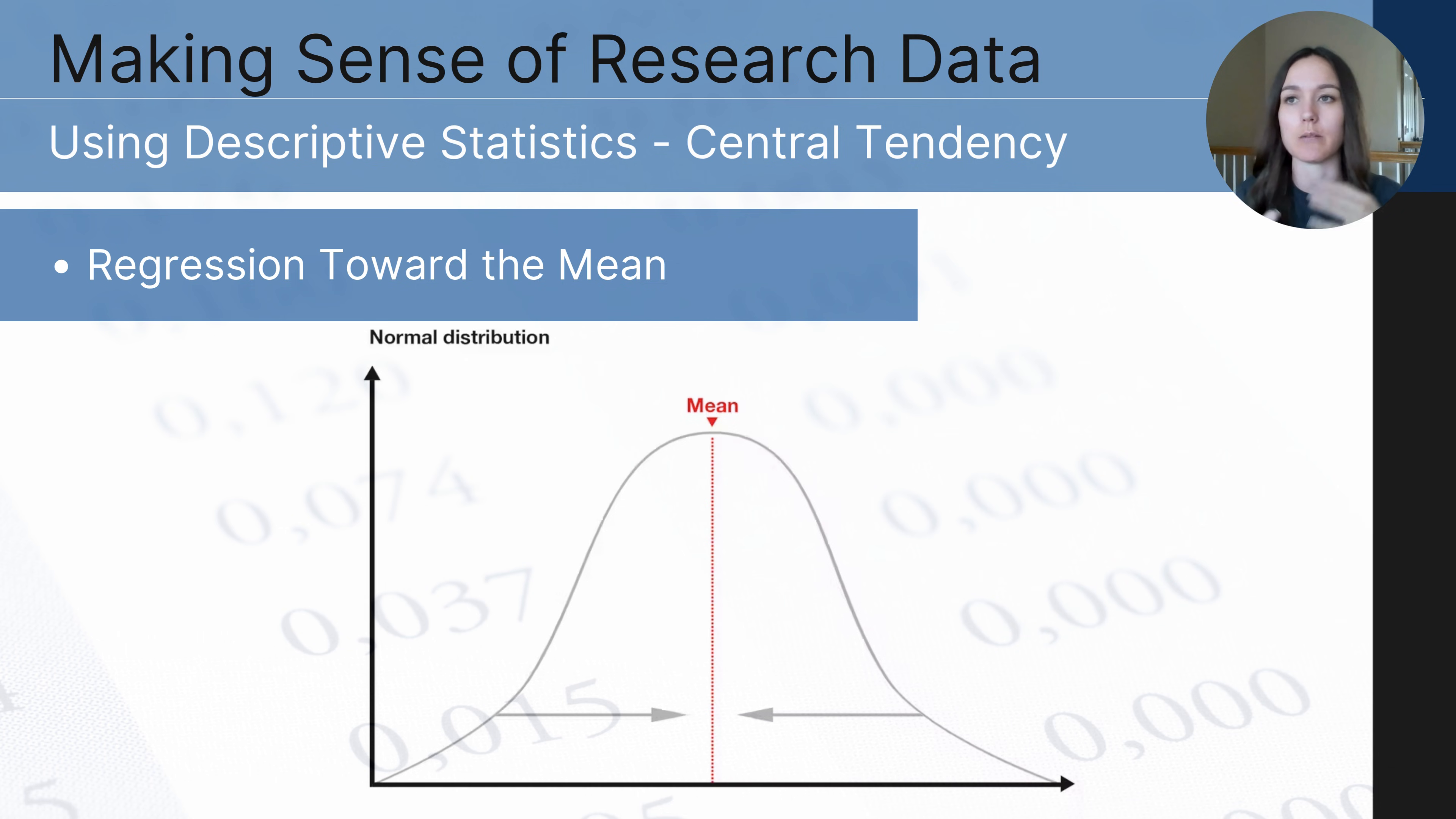This happens a lot when testing and assessments. If there is this absolutely unusually low score, if that particular sample was tested again and again, typically that will regress towards the mean.